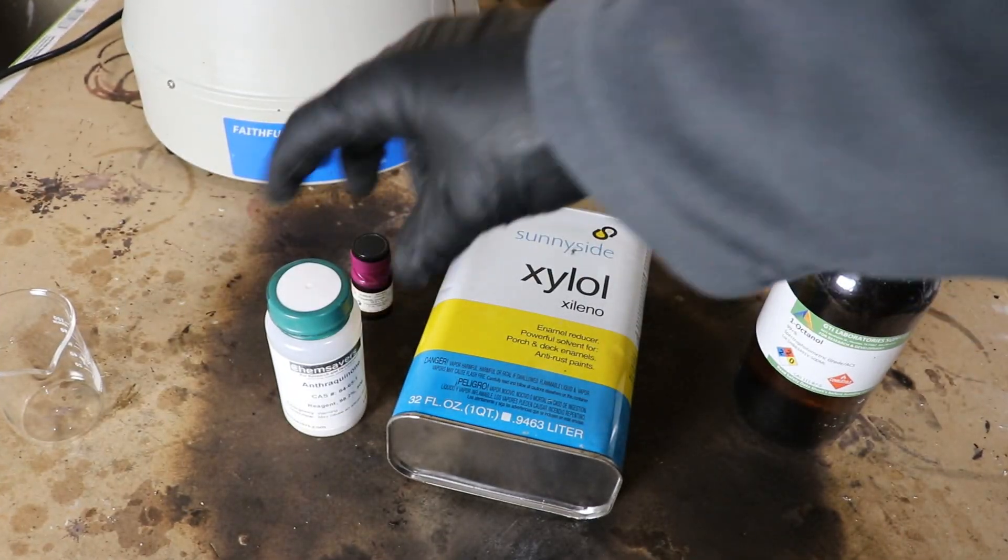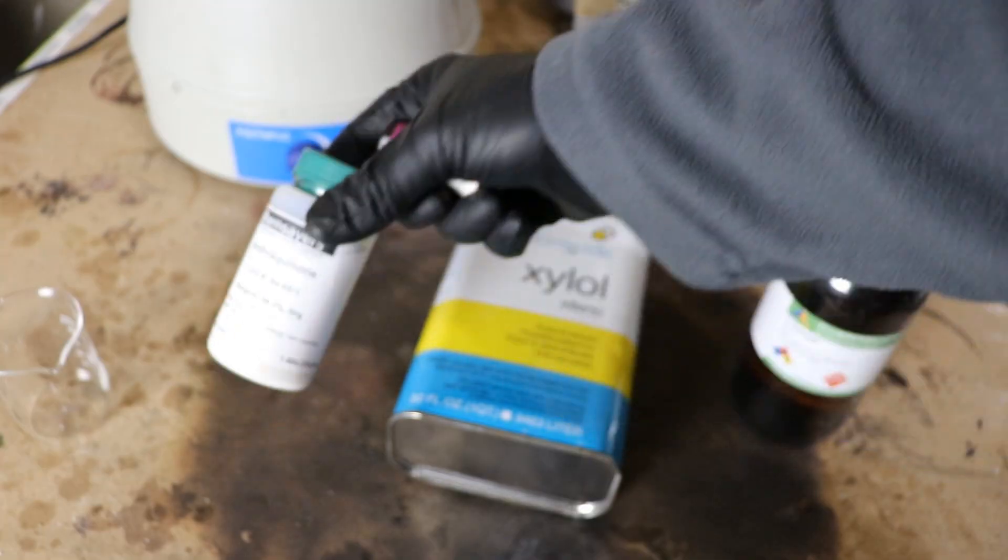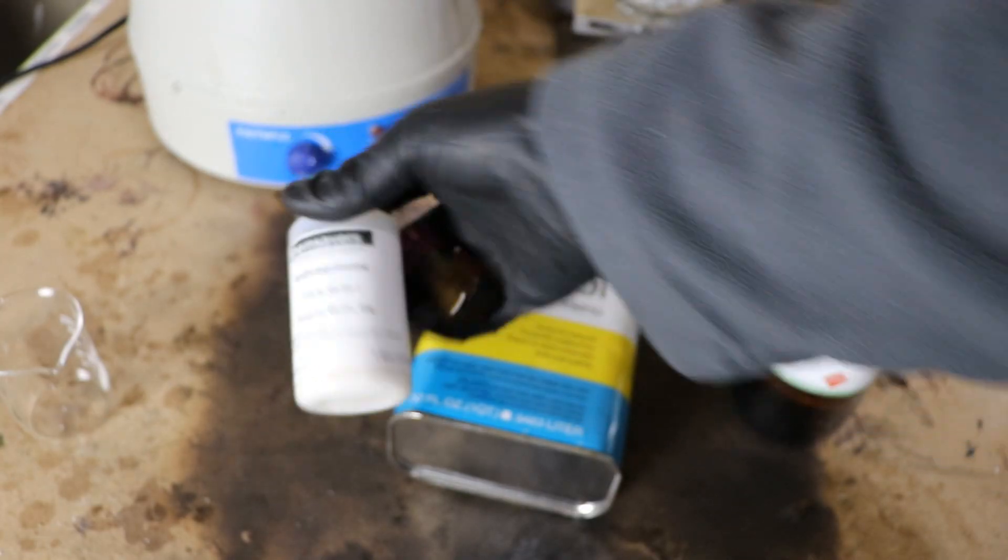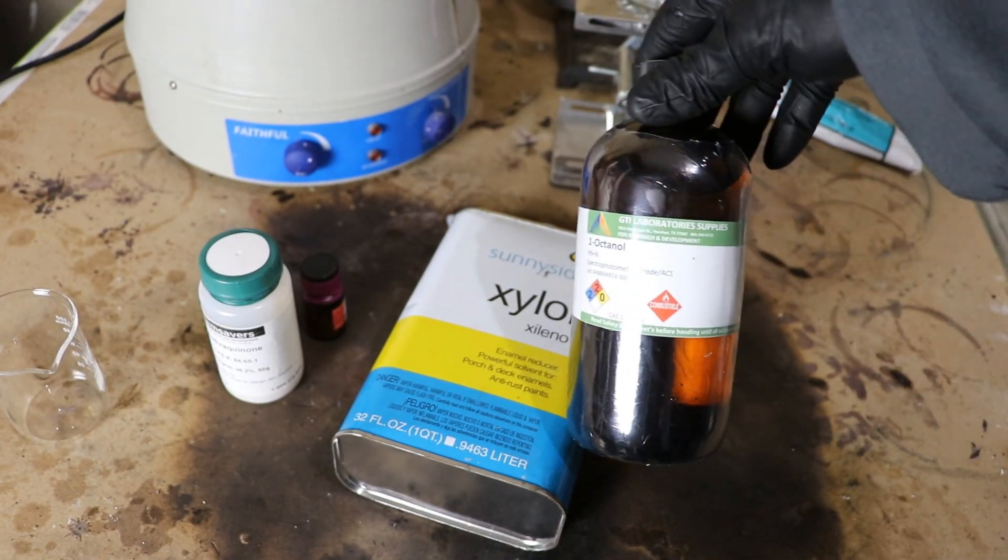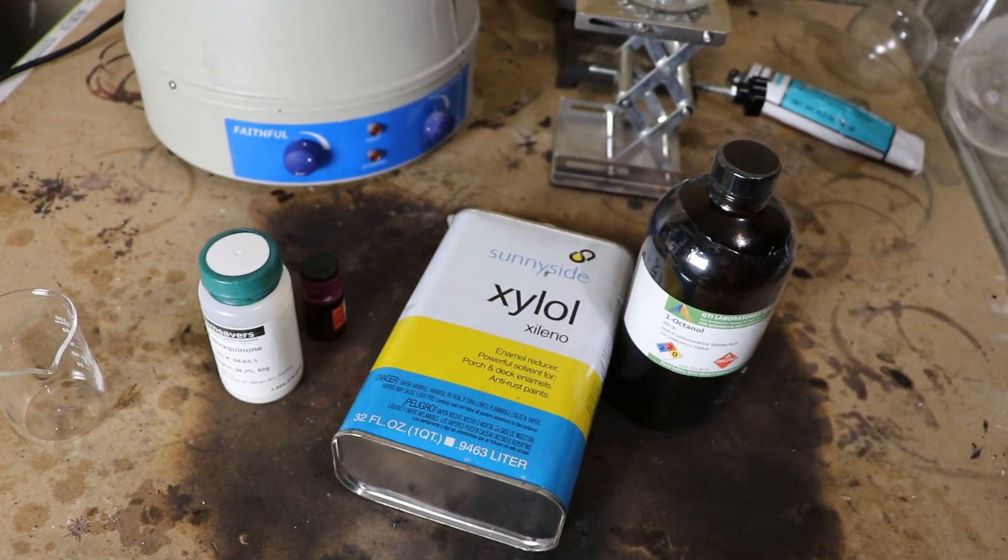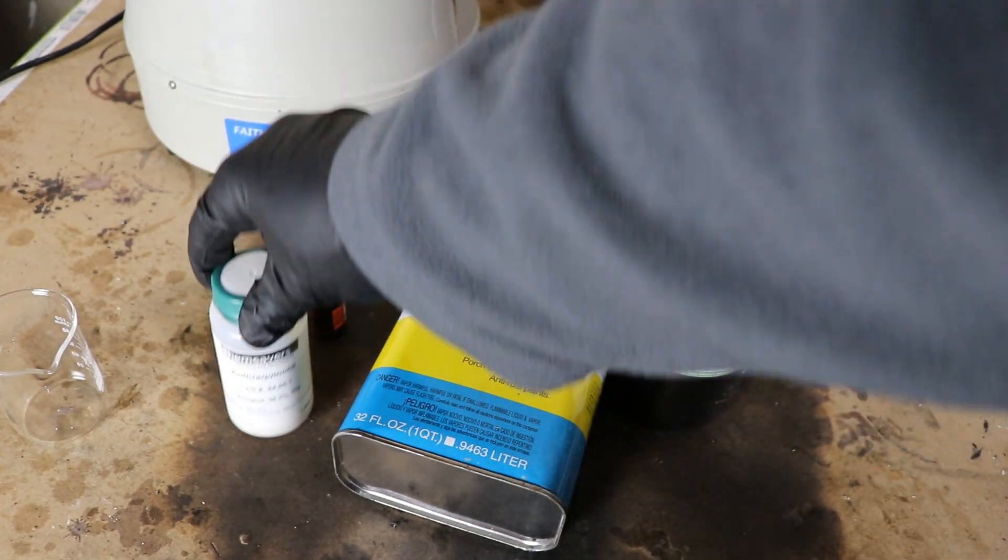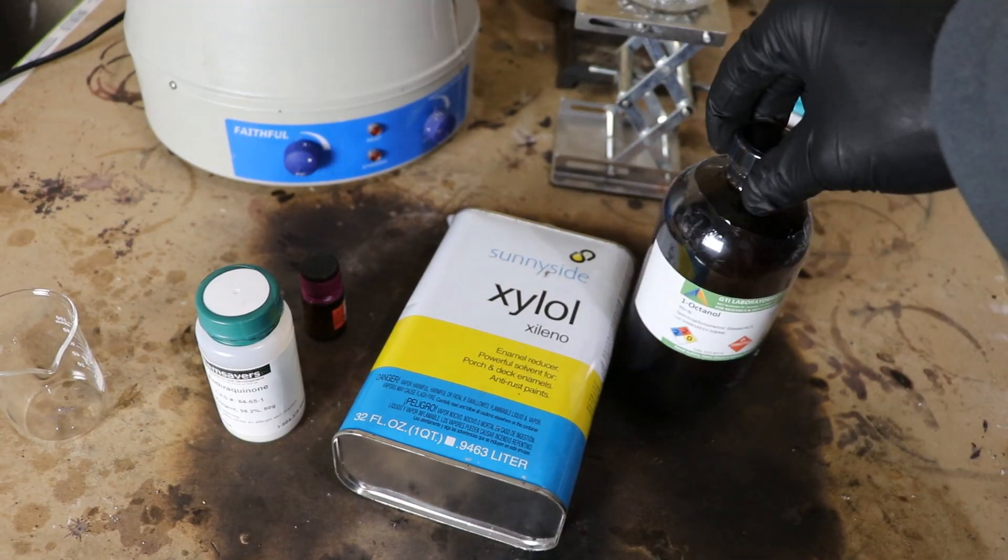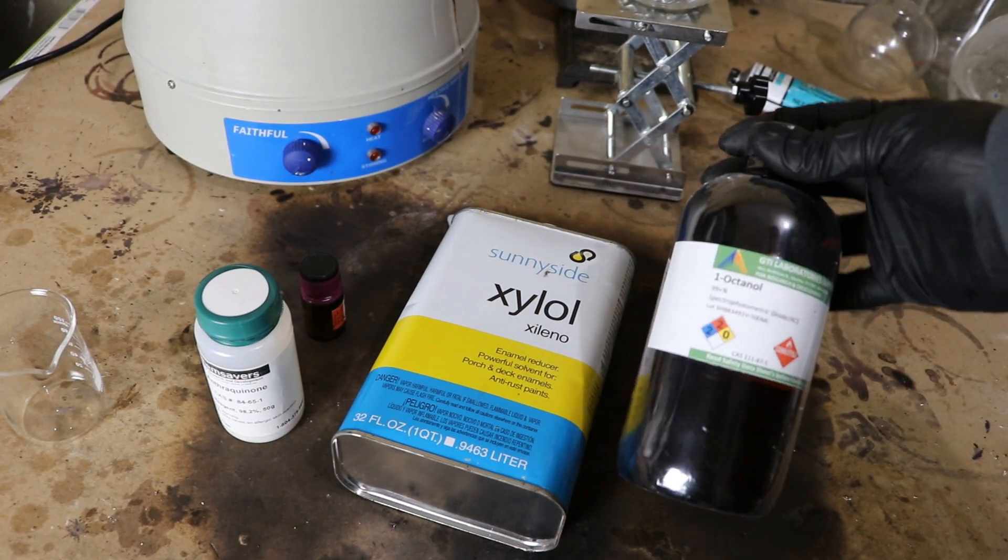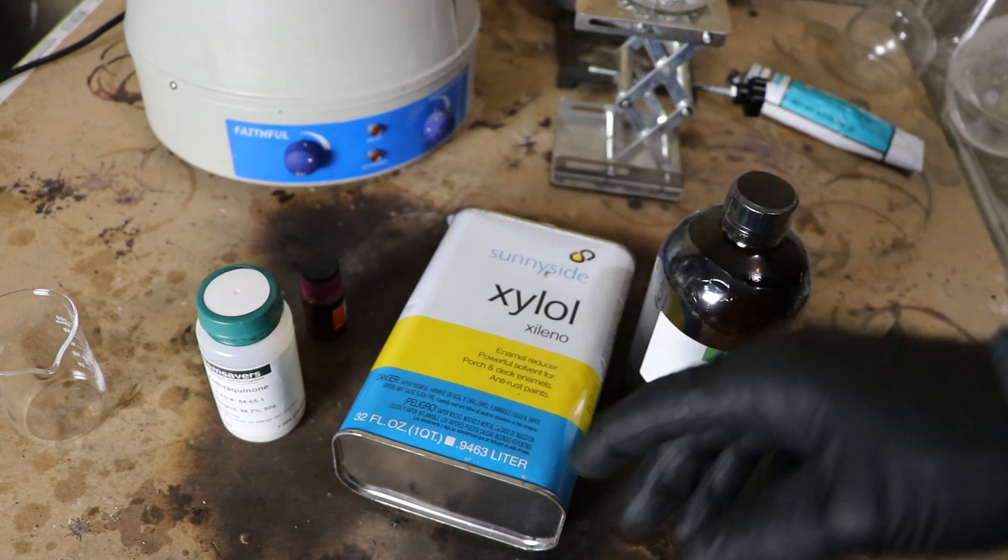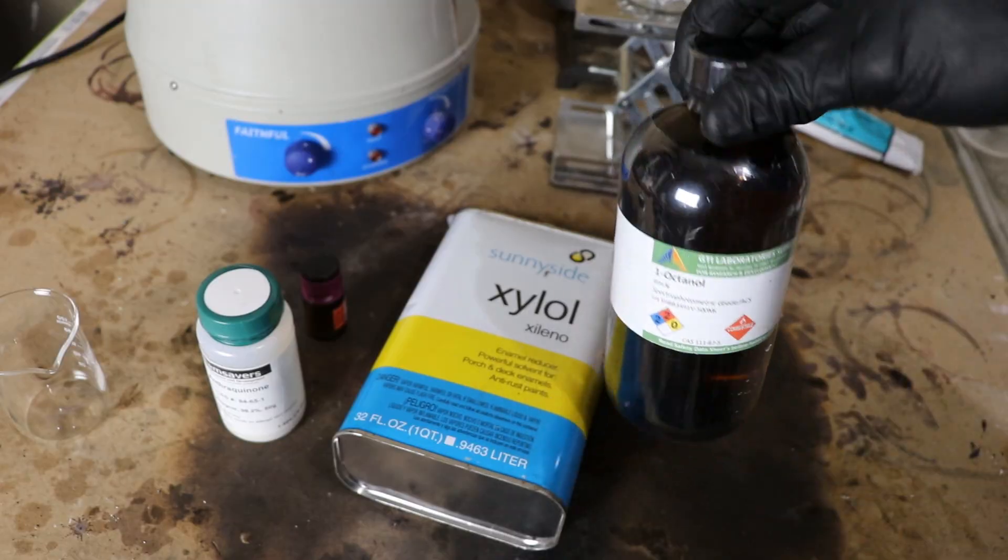So I need the anthraquinone of course, palladium to aid in the catalytic hydrogenation of this, and a couple of organic solvents. This is some xylol and some octanol. Nonpolar to dissolve the anthraquinone and polar to dissolve the hydrogenated anthraquinone. Now I think I could use a lower order alcohol such as methanol or ethanol, but I also need something that doesn't dissolve well in water so I had to use the higher order octanol.